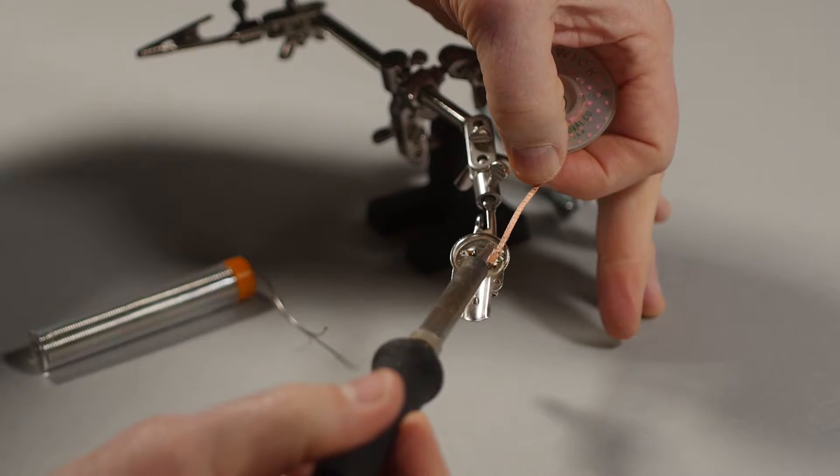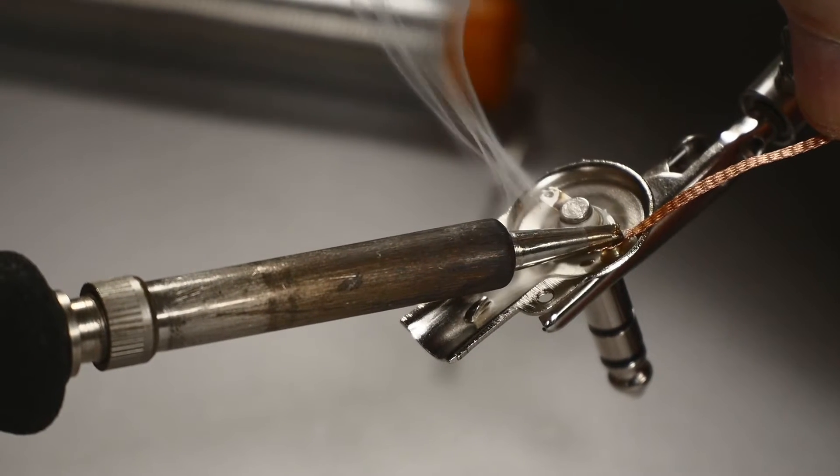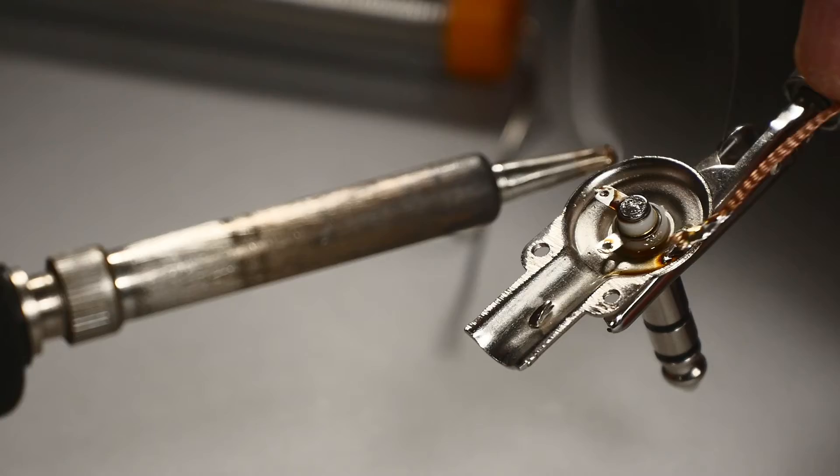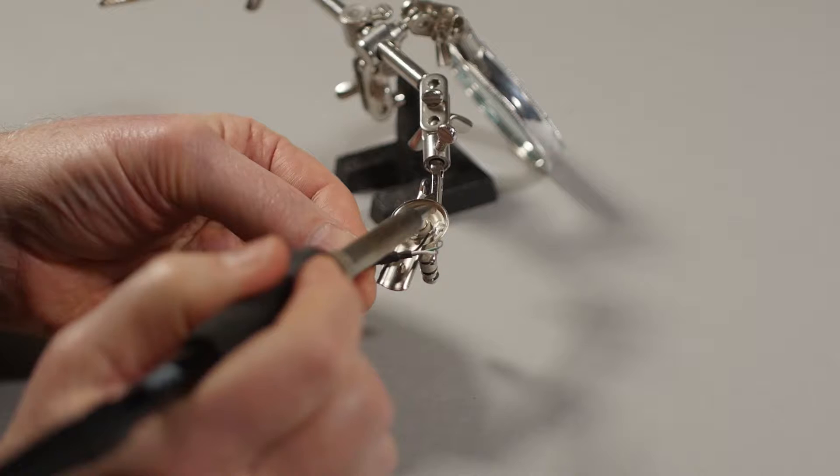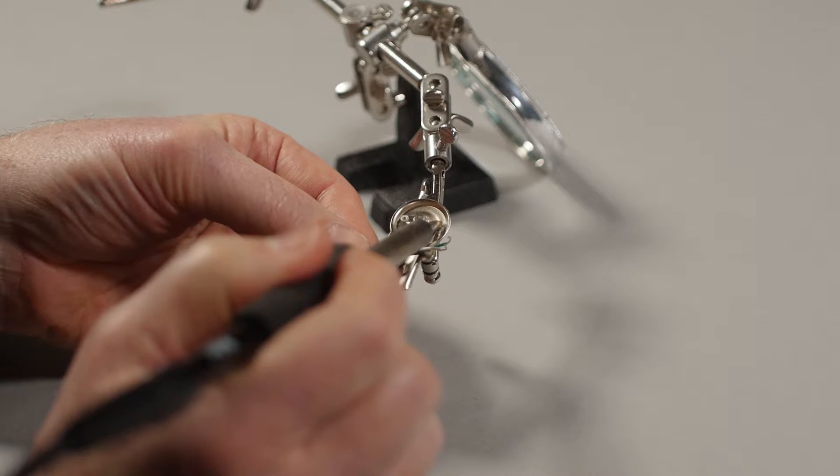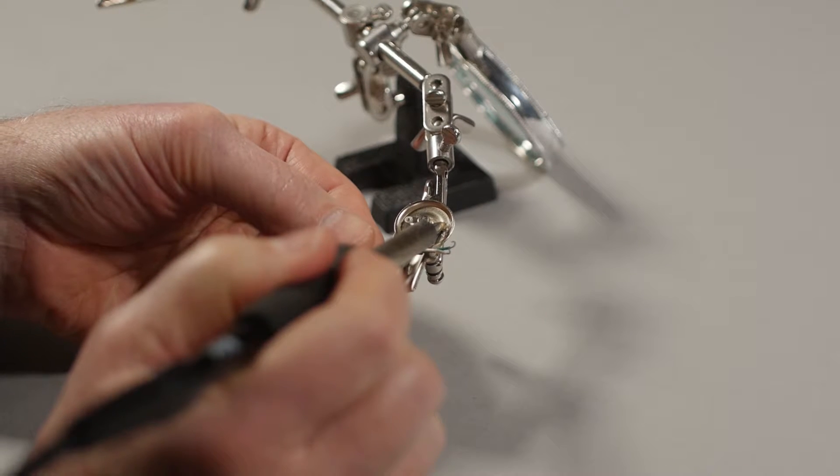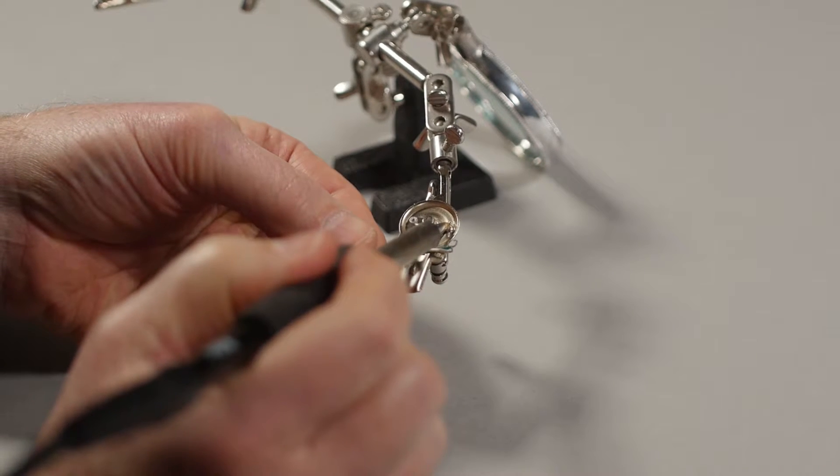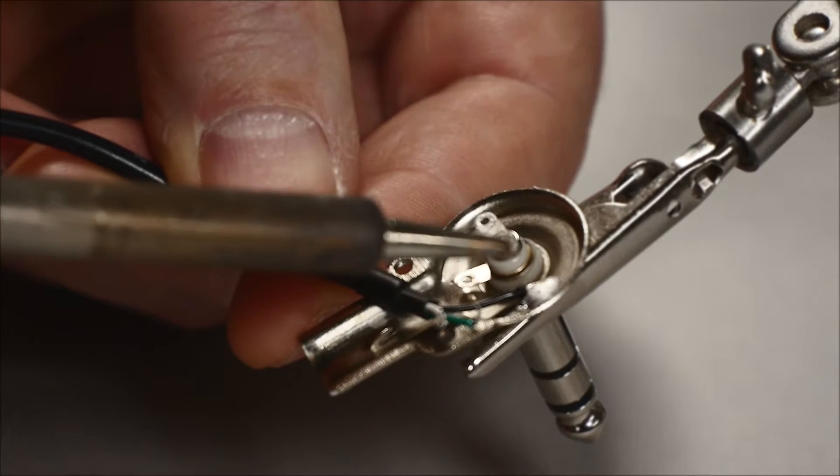Using the solder wick material, remove any excess solder. Hold a pre-tinned wire against the stainless steel connector shell and apply heat with the soldering iron until there is a discernible smooth flow of solder on the wire and the shell.